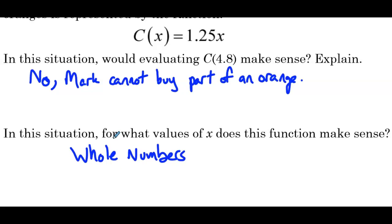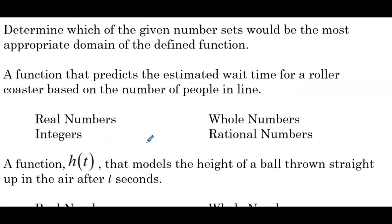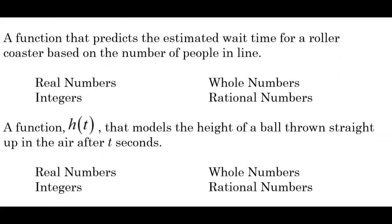Now we get into the idea of what is the best domain for a given word problem. Determine which number set would be the most appropriate domain. A function that predicts the estimated wait time for a roller coaster based on the number of people in line — that's our input. Real numbers: well, 1, 2, 3 are all real numbers, but so is 0.1 repeating, and we can't have that many people in a line. Integers: 1, 2, 3, 4 are integers, but so are negative 1, negative 2, and negative 3. That works, but let's see if we can do better.